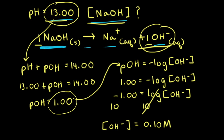The concentration of hydroxide ions is equal to 0.10 molar. And because sodium hydroxide is a strong base that dissociates completely in solution to form hydroxide ions, if the concentration of hydroxide ions in solution is 0.10 molar, so is the initial concentration of sodium hydroxide.